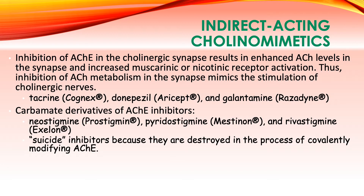Inhibition of acetylcholinesterase in the cholinergic synapse may result in enhanced acetylcholine levels in the synapse. If we have more acetylcholine, there is an increased chance that acetylcholine can bind to the receptor in the postganglionic area. These areas may have muscarinic and nicotinic receptors. If acetylcholine is not deactivated by acetylcholinesterase, it can bind to either the muscarinic or nicotinic receptor.